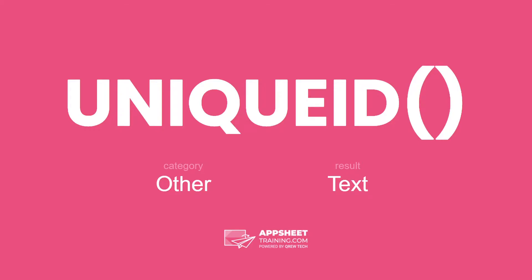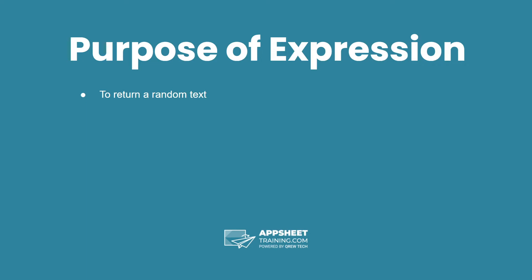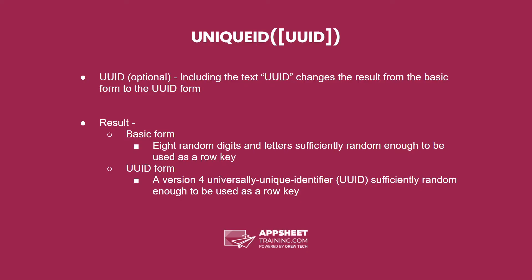The Unique ID expression is in the category Other and has a result of a text data type. The purpose of this expression is to return a random text. The Unique ID expression has one optional parameter: the text UUID, which will change the result from the basic form to the UUID form.